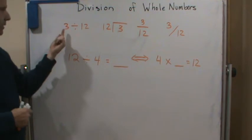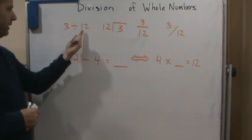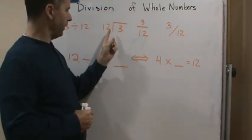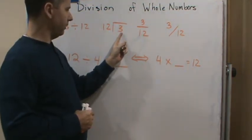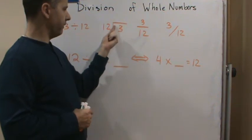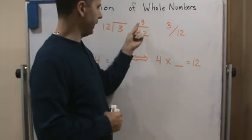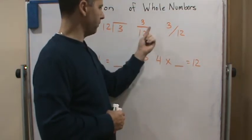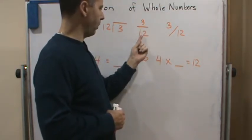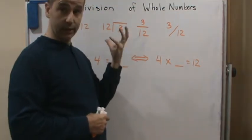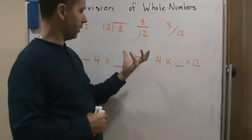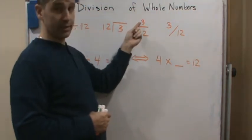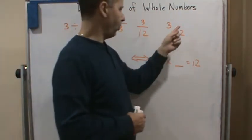This says 3 divided by 12. This you can read two different ways: you can read 12 divided into 3, or you can say 3 divided by 12. This also says 3 divided by 12 - this is the division bar. So fractions are division symbols. When we read this as 3/12, we can also read this as 3 divided by 12, and then of course this is another way of showing the same thing.